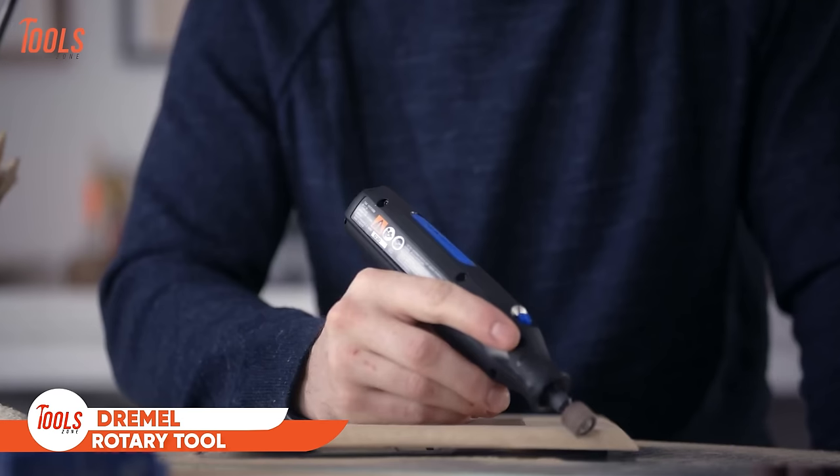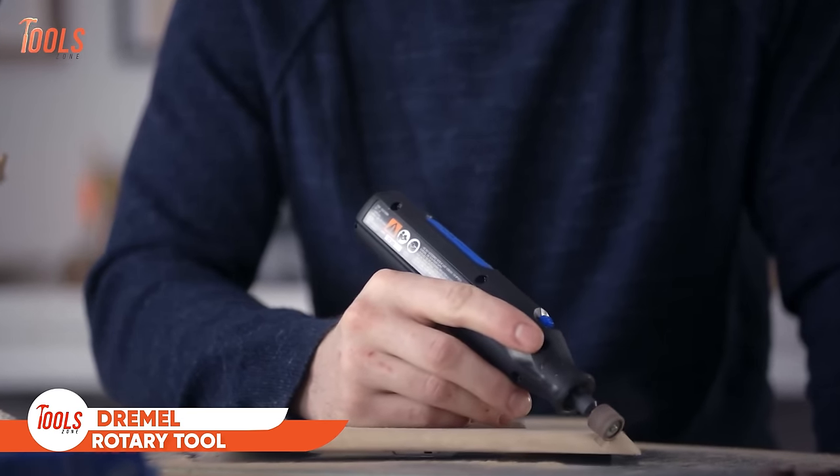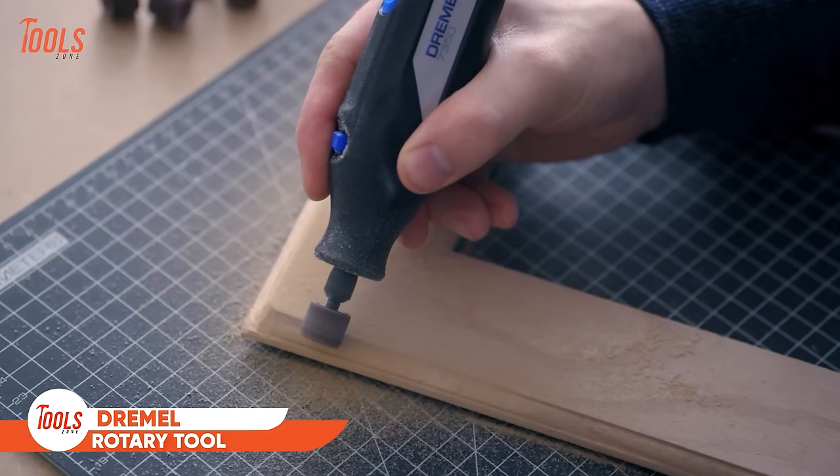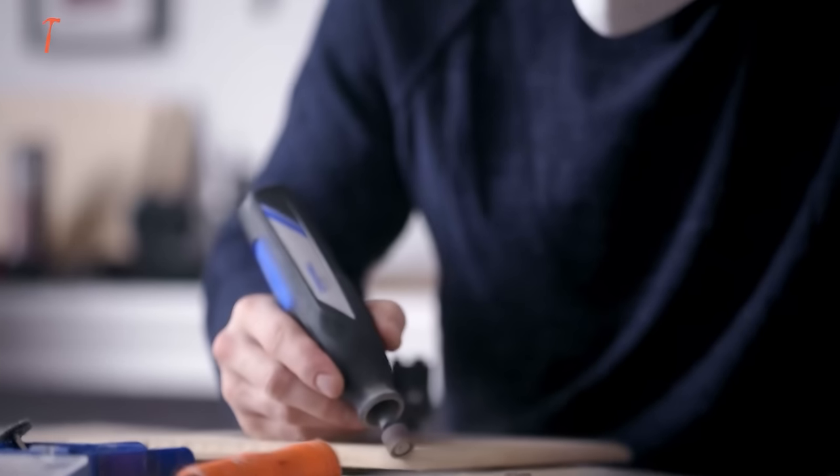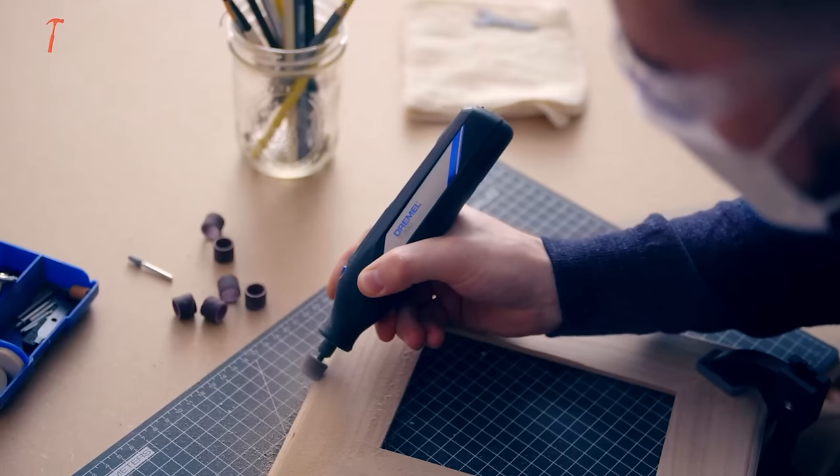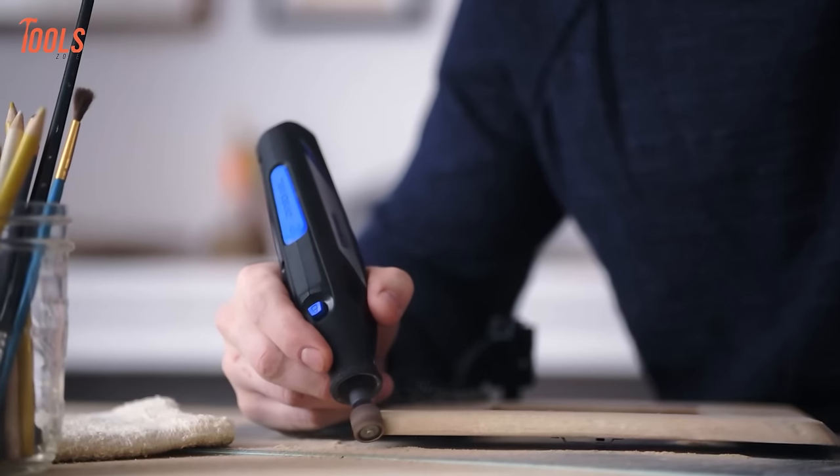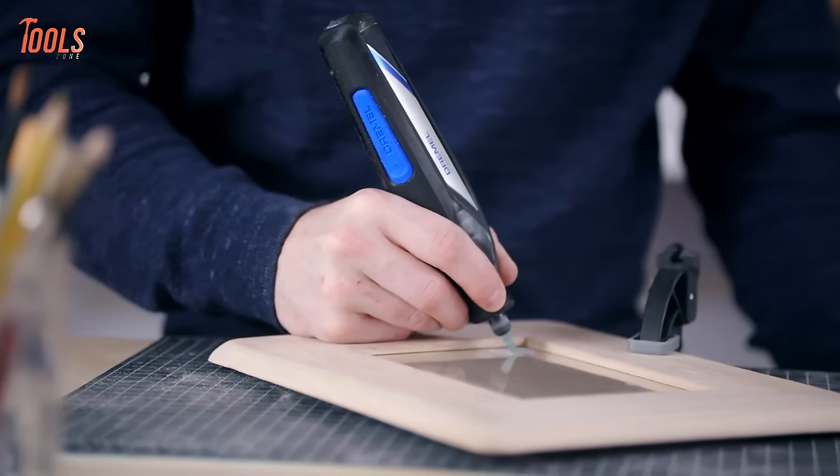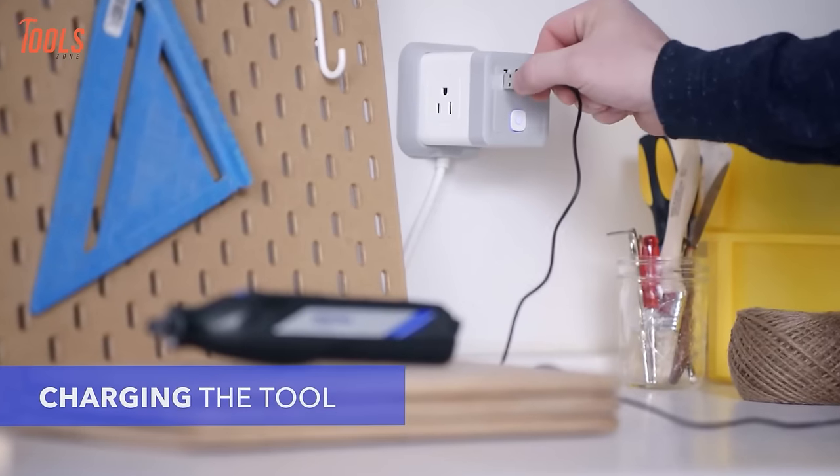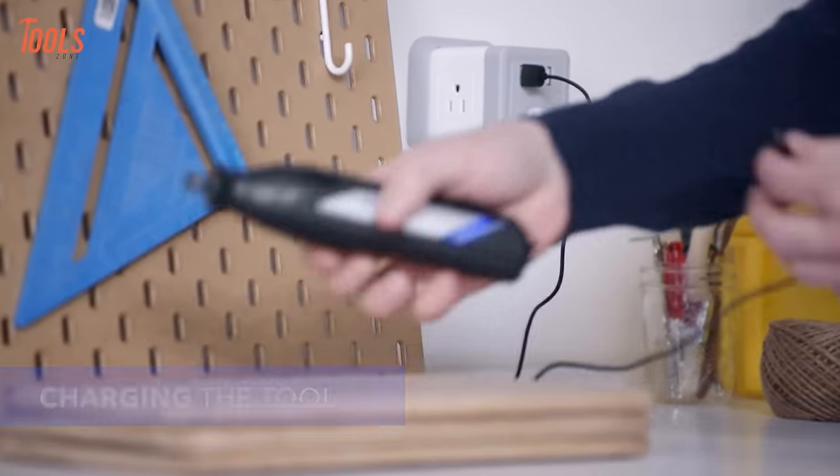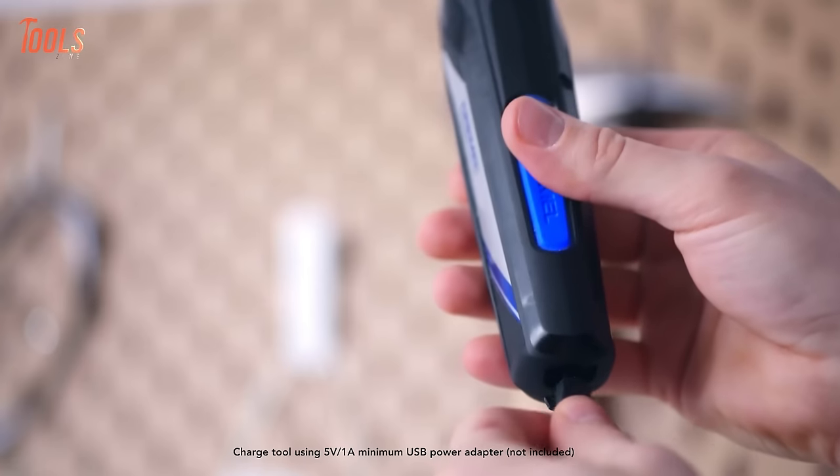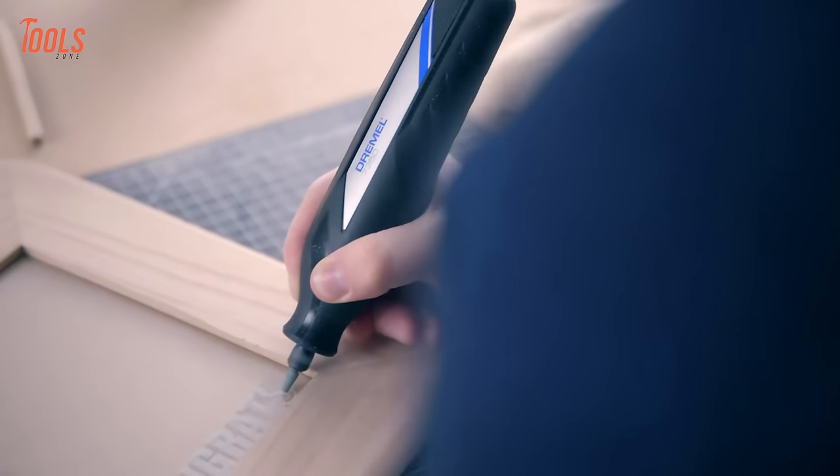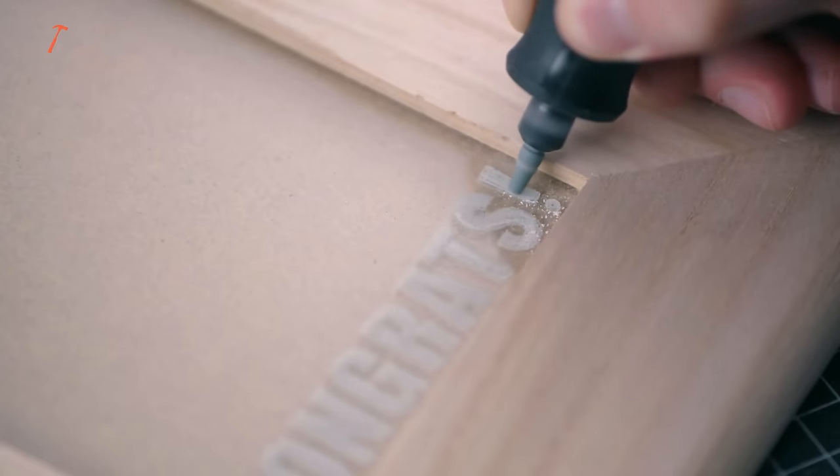The Dremel Rotary Tool is incredibly versatile. Its compact, cordless design allows easy access in tight spaces for greater precision and control during delicate tasks. The powerful motor handles tasks like sanding, grinding, cutting, and engraving with precision, coming to its rechargeable battery, which lets you work uninterrupted without troublesome cords. This lightweight, portable tool can complete intricate projects with ease.